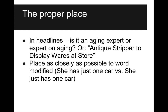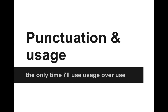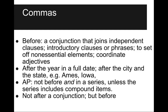'She has just one car' versus 'she just has one car.' Now let's talk about punctuation and usage. Commas: use them before a conjunction that joins independent clauses, introductory clauses or phrases, to set off non-essential elements like around a 'which' clause, before and after that clause, coordinate adjectives, after the year in a full date, after the city and the state — like 'Ames, Iowa.' AP says not to use the Oxford comma — don't use it before 'and' in a series unless the series includes compound items, like 'he had eggs and bacon, and ham for breakfast.' Don't use commas after a conjunction, but before it.